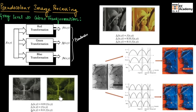Here we have an example where a grayscale image is converted into a pseudo color image using the formulas written here. The red plane is obtained by multiplying 0.33 with the grayscale image. The green plane is obtained by taking the grayscale image as it is. And the blue plane is obtained by multiplying 0.11 with the grayscale image.